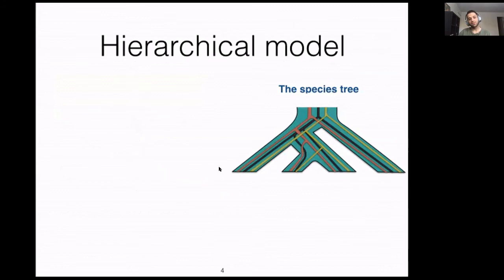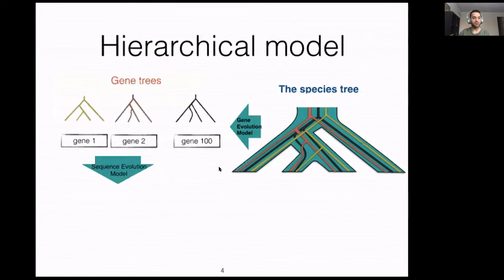So how do we think about these discordances? We can model and address these discordances by using a hierarchical model and a two-step approach. The first parameter for this approach is the species tree and the branch lengths. Using gene evolution models, we could generate the gene trees, and then using those gene trees and sequence evolution models, we could generate the sequences.